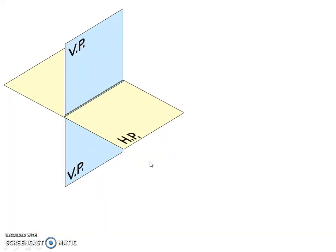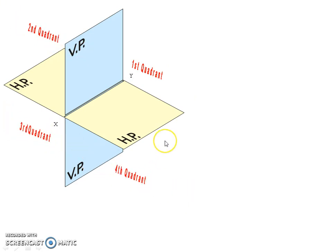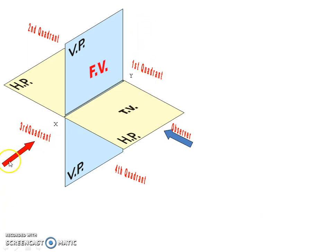Here we can see the VP, HP, and the four quadrants constructed by VP and HP: the first quadrant, second quadrant, third quadrant, and the fourth quadrant. The observer is looking from here; we are getting the front view on VP and the top view on HP. When looking from this direction, we can see a point. The intersection of VP and HP represents the XY line.